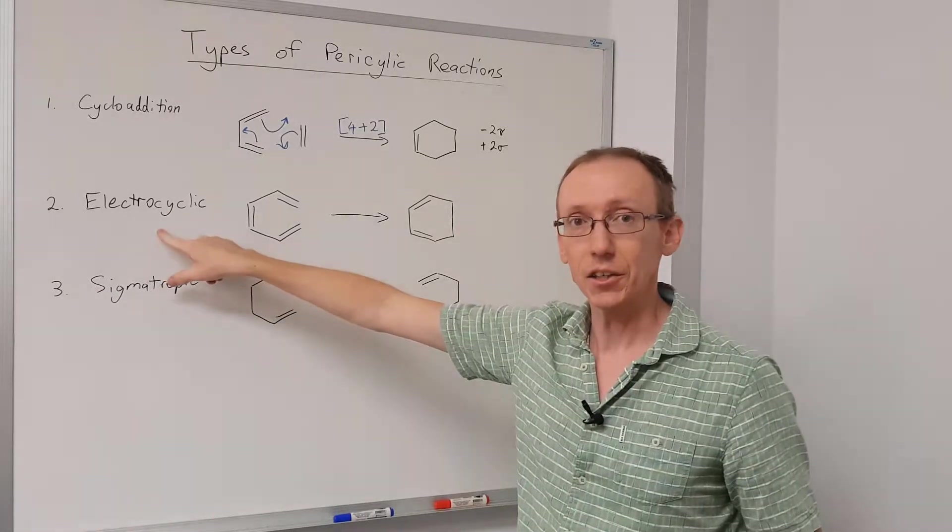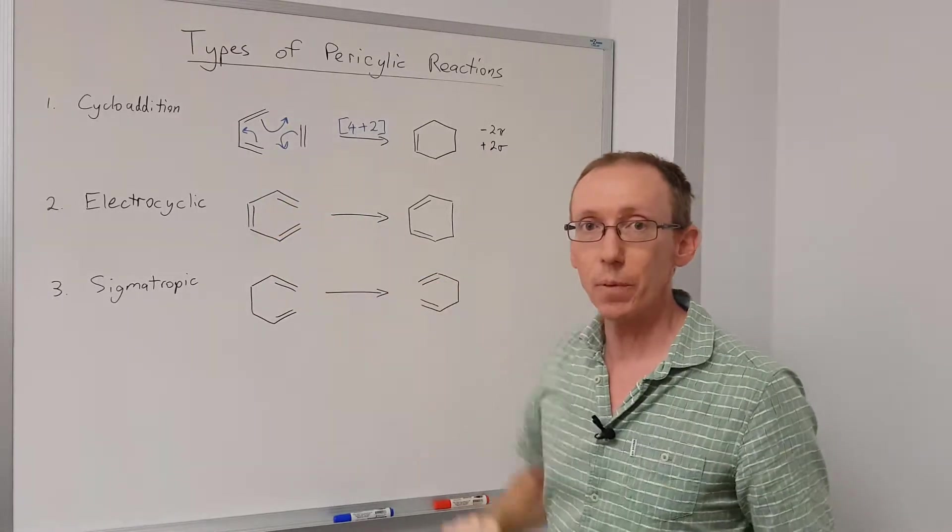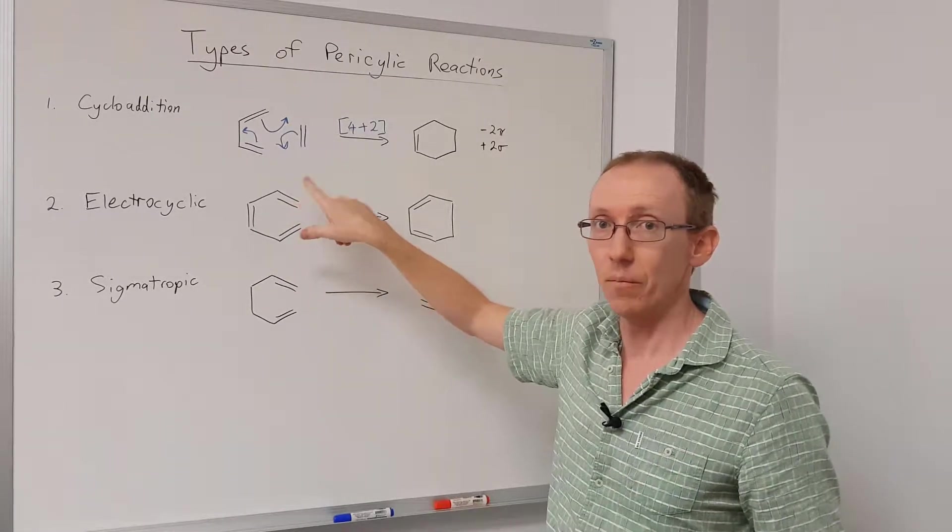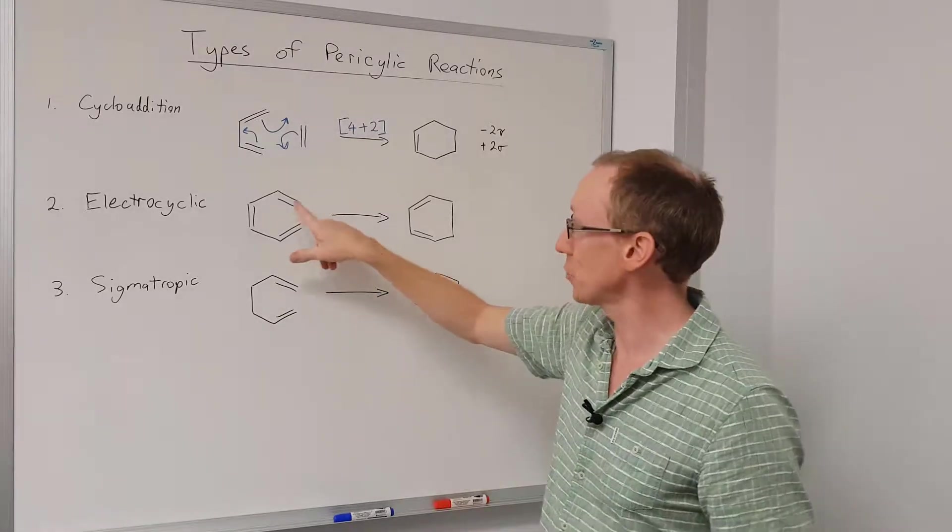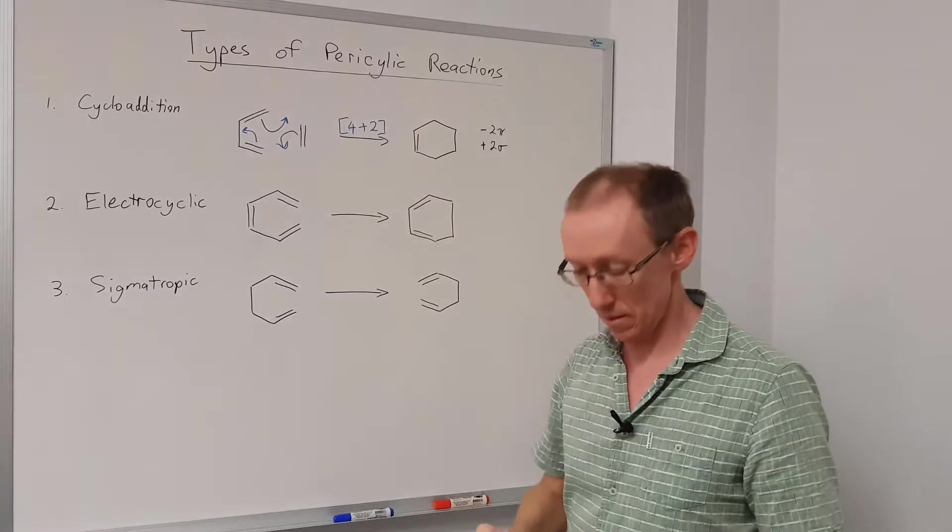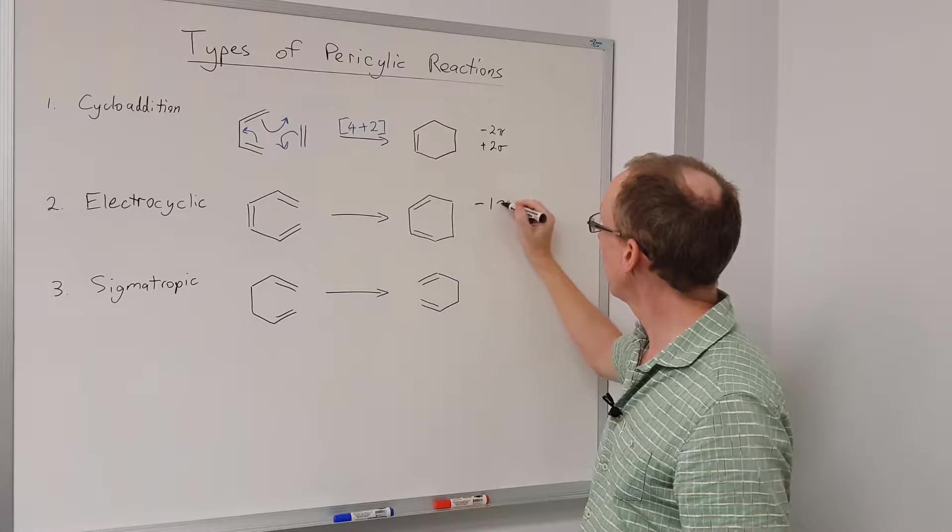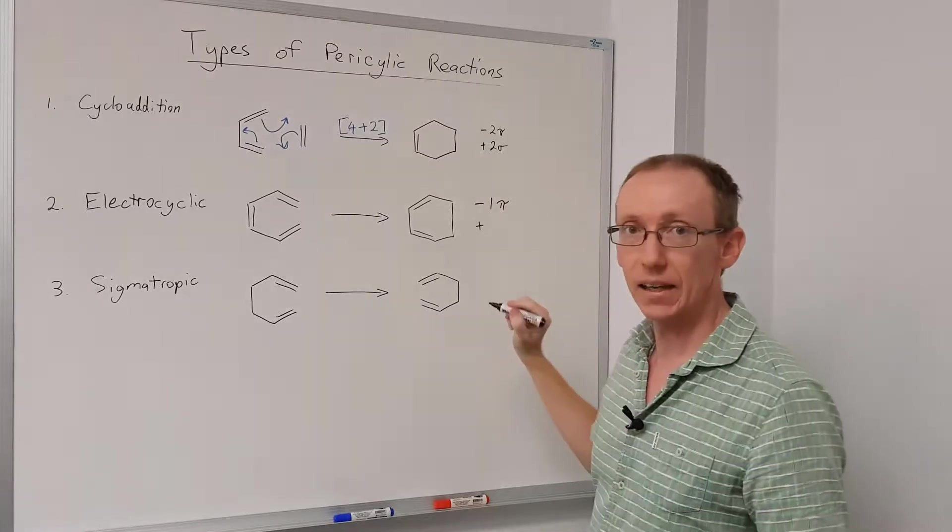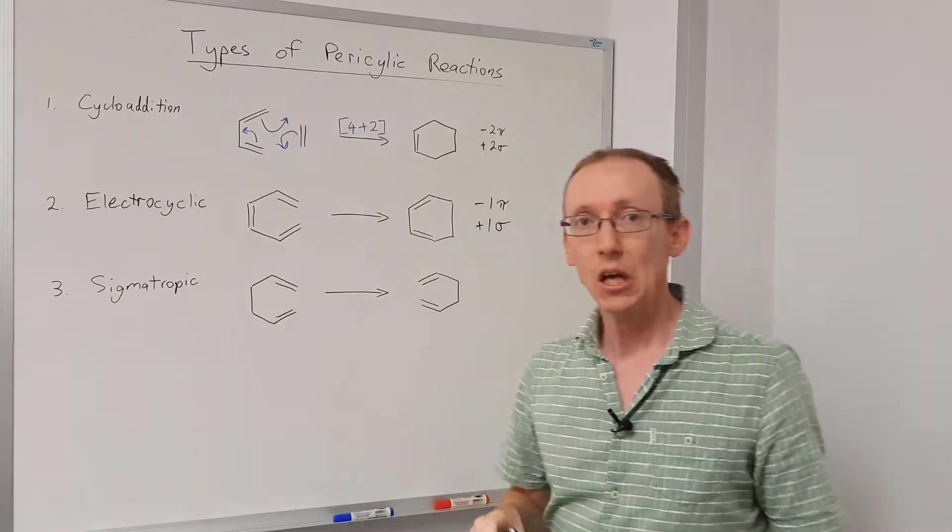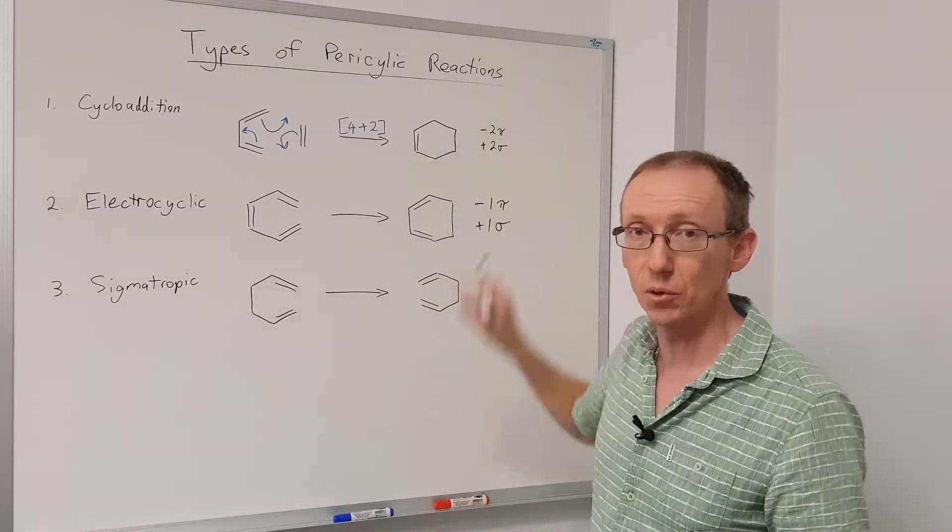Now, electrocyclic reactions are where we have an acyclic molecule with a certain number of pi electrons, and it undergoes a reaction where those pi electrons move to form a new sigma bond, and we lose one pi bond. So overall, this process will lose one pi bond and gain one sigma bond. And so overall, all other things being equal, we would also think that this would be favorable in a forward direction because sigma bonds are generally more stable than pi bonds.